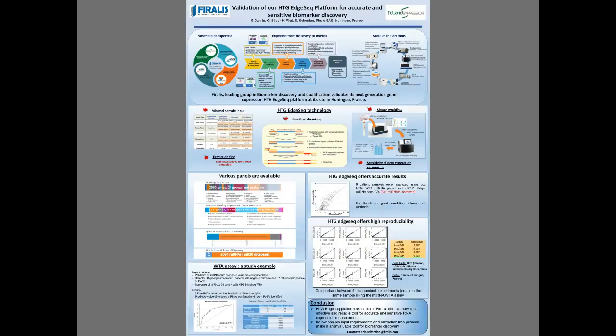To resume this technology, you can see here the workflow. We are starting from samples that we prepare to put in the HTG processor. In this processor, steps 1 to 3 of the chemistry will happen. It will take around 20 hours and we will be able to process 96 samples at once.